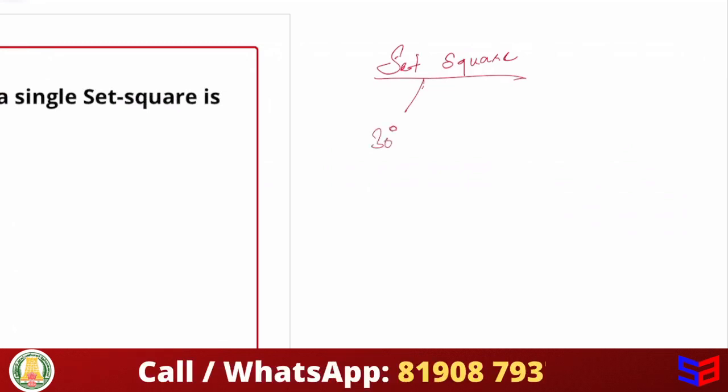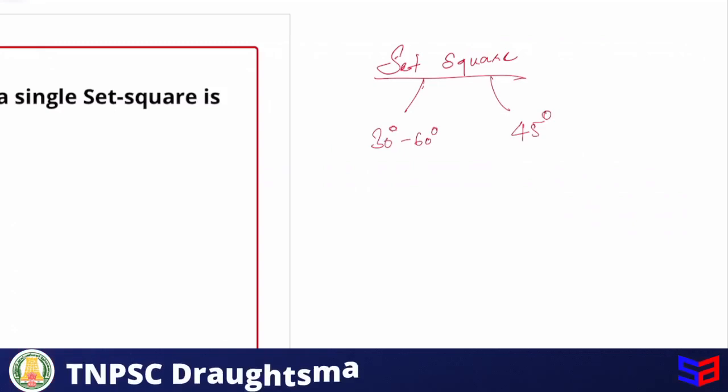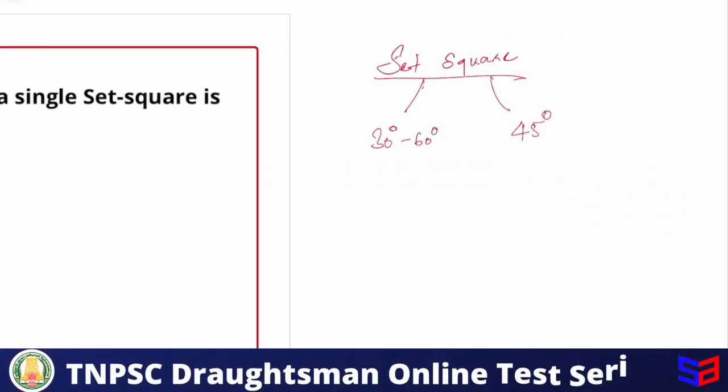One is the 30-60 degree set square, and the other one is the 45 degree set square. The 30-60 degree set square uses 30 degree and 90 degree.